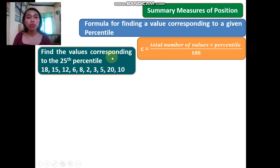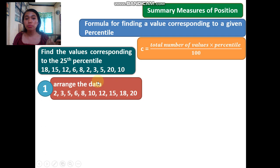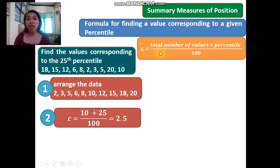Find the value corresponding to the 25th percentile. The first step is the same as our previous example: arrange the data. The second step is to use the formula. The total number of values is 10, and the percentile is 25. So we have (10 times 25) divided by 100, which equals 2.5.